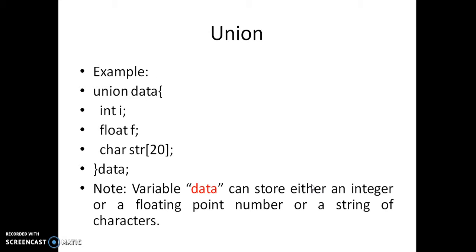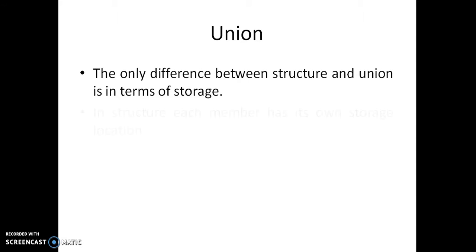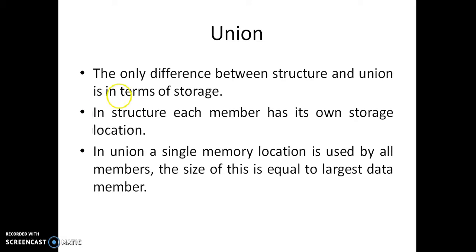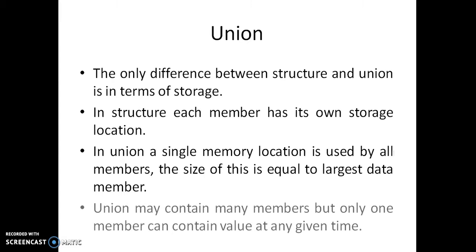The size of that memory location depends on the largest data member. For example, int i may be 4 bytes, float f may be 4 bytes, and char str[20] — since a character is 1 byte — can accommodate 20 characters, meaning 20 bytes. So 20 bytes will be allocated for this union. Union may contain many members, but only one member can contain a value at any given time.